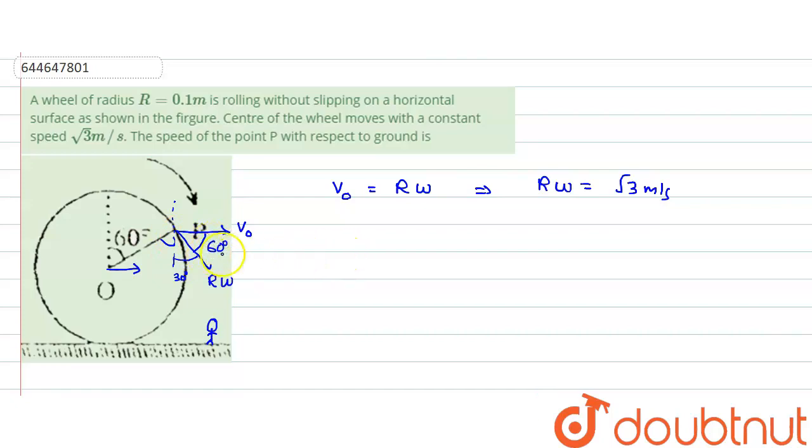That means we have two vectors. What would be the resultant? Resultant value would be V_net equals square root of V_naught squared plus R omega squared plus 2 times V_naught into R omega times cosine theta.